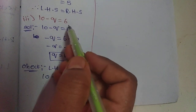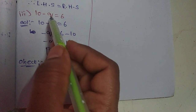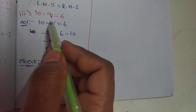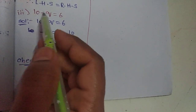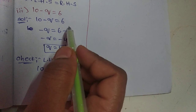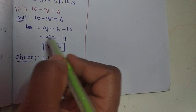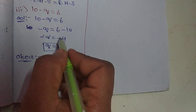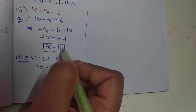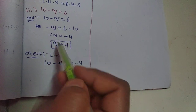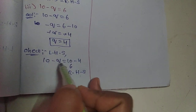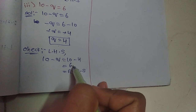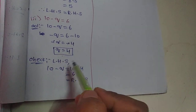Third one: 10 minus Q equals 6. We transpose positive 10 to the right side as minus 10. So minus Q equals 6 minus 10, which is minus 4. The minuses cancel on both sides, so Q equals 4. Checking: substitute Q equals 4 into 10 minus Q. 10 minus 4 is 6. So LHS equals RHS.